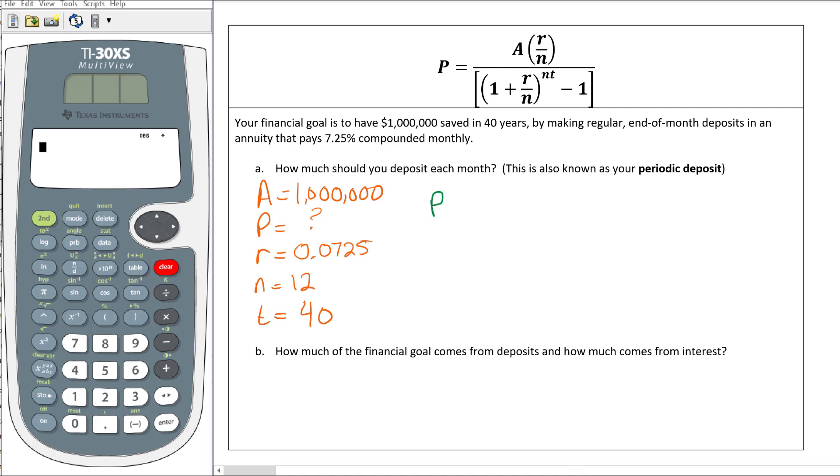So I'm going to have P equals on the numerator 1 million, parentheses 0.0725 divided by 12, over bracket parentheses 1 plus 0.0725 divided by 12 raised to the 12 times 40 minus 1.